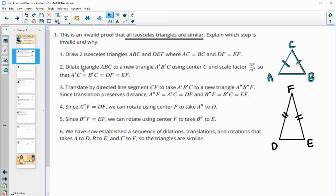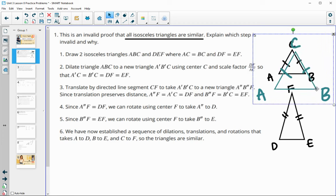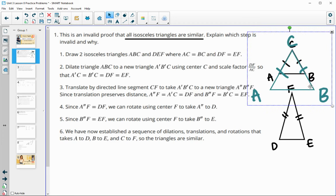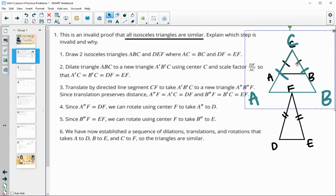Now, the next step is asking us to dilate this triangle ACB to create a new triangle, and we're going to leave C as the center, and we're going to do a scale factor of DF, so the new triangle length divided by the original. So we'll just dilate this using C as the center, and then we just want to get it so that this new A'C' is the same length as DF. All right, so this is now our A'B'C', so this is our new triangle. So that's fine, we can certainly dilate to any scale factor we want.